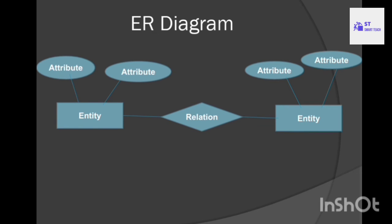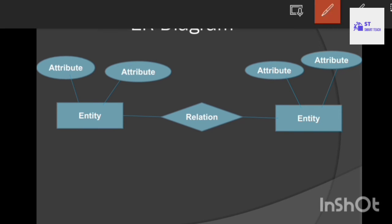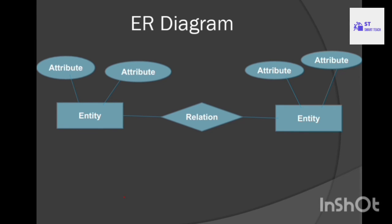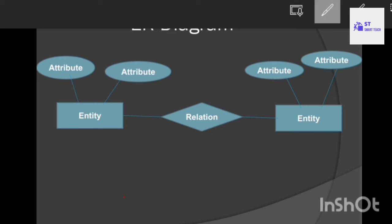This is an ER diagram. In an ER diagram, entities are represented by rectangles, attributes are represented by ellipses, and relationships are represented by rhombus symbols. One entity is related to another entity — that association is known as a relation. Entity one consists of some properties which are its attributes, and entity two also consists of some properties, and these two entities are related using a relation.